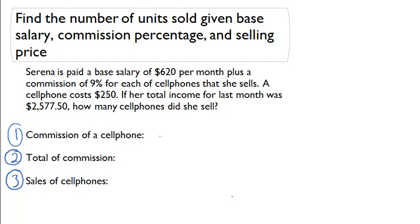So let's first start off with the commission of a cell phone. We can calculate that by doing $250 times 9% commission, and that's going to equal $22.50.